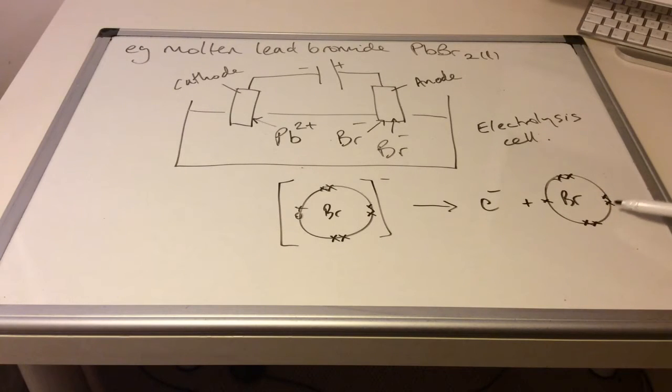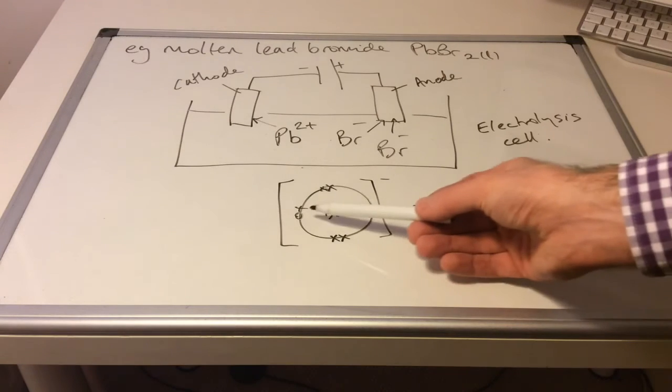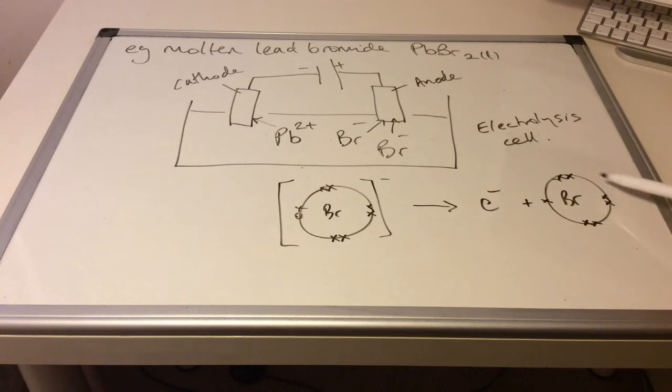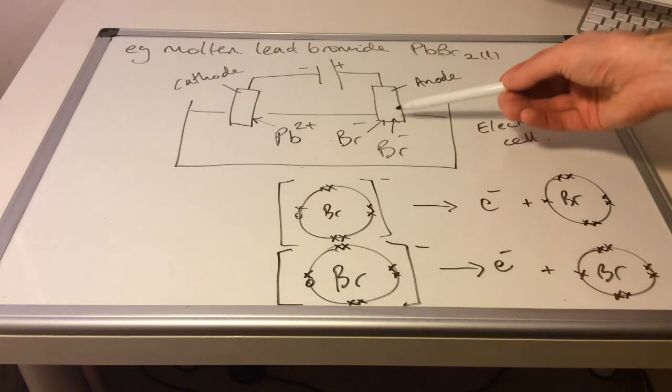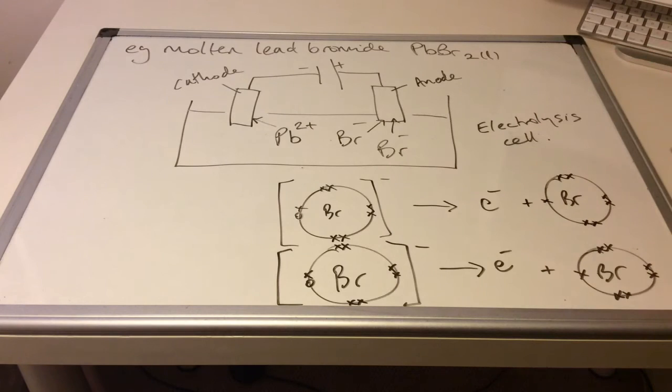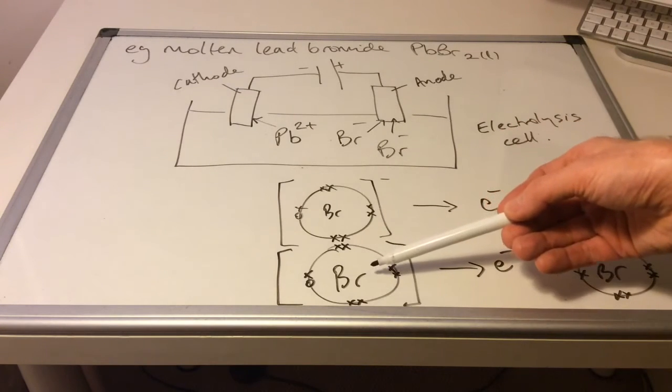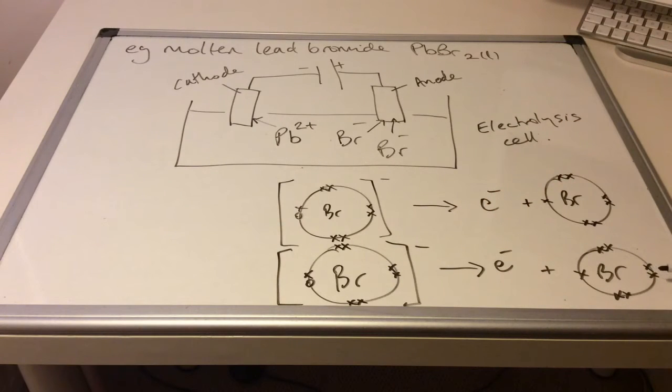So like the original bromine atom before it gained the negative charge with its 7 outer electrons. Now, there won't just be one bromide ion that goes to the anode. There'll be quite a few. So there's another one doing exactly the same thing. So have a think.